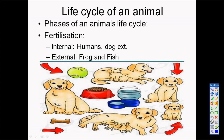Now let's look at the life cycle of animals. Firstly, fertilization takes place inside animals — it can be either internal or external. Fertilization is internal in mammals such as humans, dogs, and elephants. The sperm from the male fertilizes the egg of the female on the inside, and that baby grows inside the female's stomach until it is time for the female to give birth.